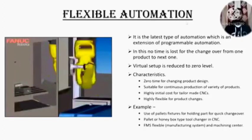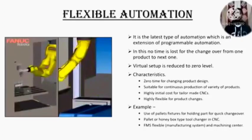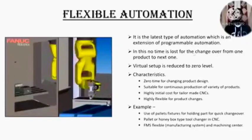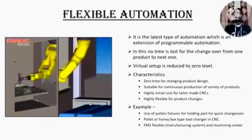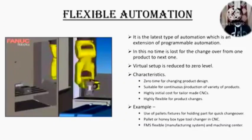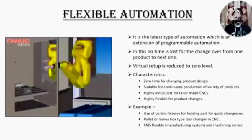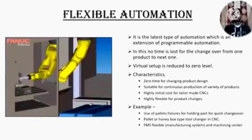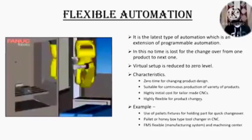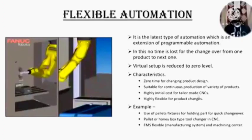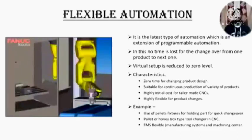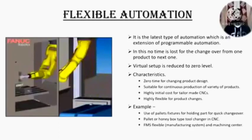The next one is flexible automation. It is the latest type of automation which is an extension of programmable automation. In this, no time is lost for the changeover from one product to the next one. Virtual setup is reduced to zero level. Characteristics: zero time for changing product design; it is suitable for continuous production of a variety of products; high initial cost for tailor-made CNC; highly flexible for product changes. Examples include use of pallet fixtures for holding parts for quick changeover, pallet or honey-box type tool changer in CNC, FMS flexible manufacturing system, and machining centers.